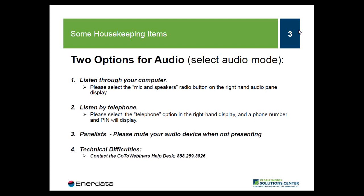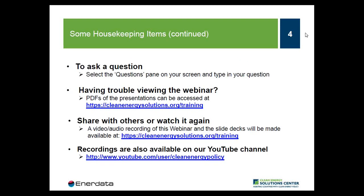Before we begin, I want to go over some webinar features. You have two options for audio: you may either listen through your computer or over your telephone. If you choose to listen through your computer, please select the mic and speakers option in the audio pane to eliminate the possibility of any feedback and echo. If you choose to dial in by phone, please select the telephone option and a box on the right side will display the telephone number and audio pin. If anyone is having technical difficulties, you may contact the GoToWebinars Help Desk at 888-259-3826.